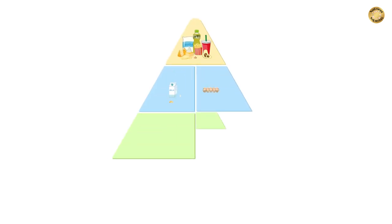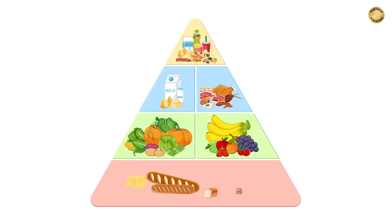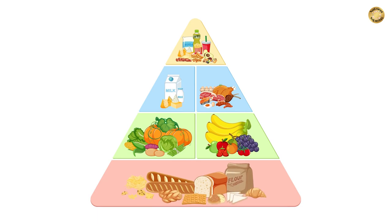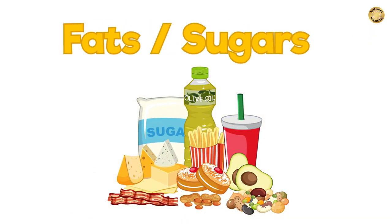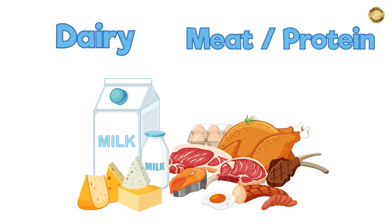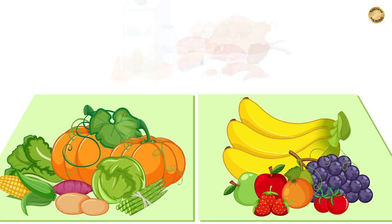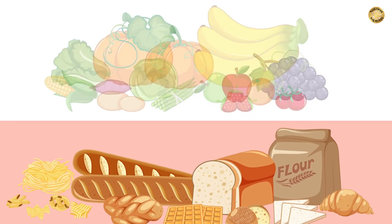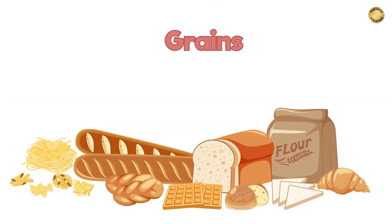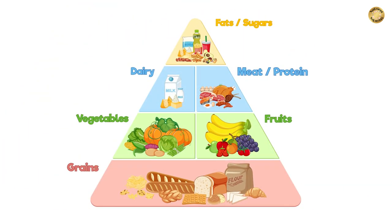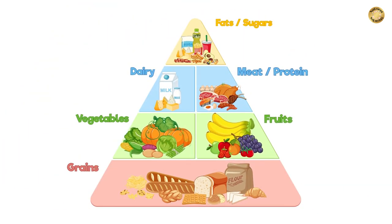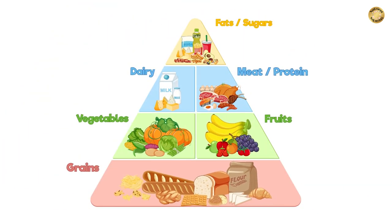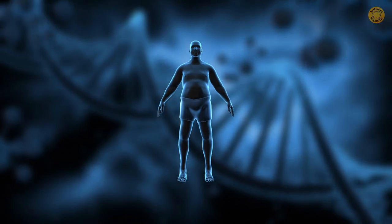Next is micronutrient under-nutrition. Micronutrients are vitamins and minerals your body needs in smaller amounts, but it does need them for all types of functions. Many people are mildly deficient in certain vitamins and minerals from a lack of variety in their diet. You might not notice a mild vitamin deficiency, but as micronutrient under-nutrition becomes more severe, it can begin to have serious and lasting effects.